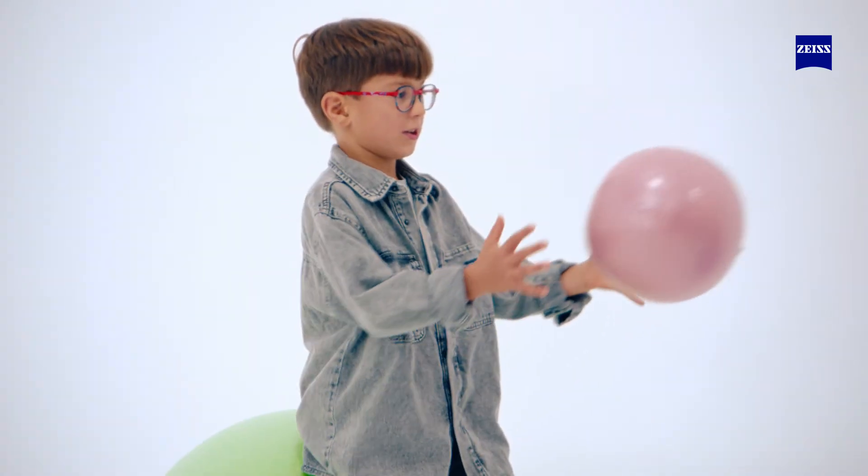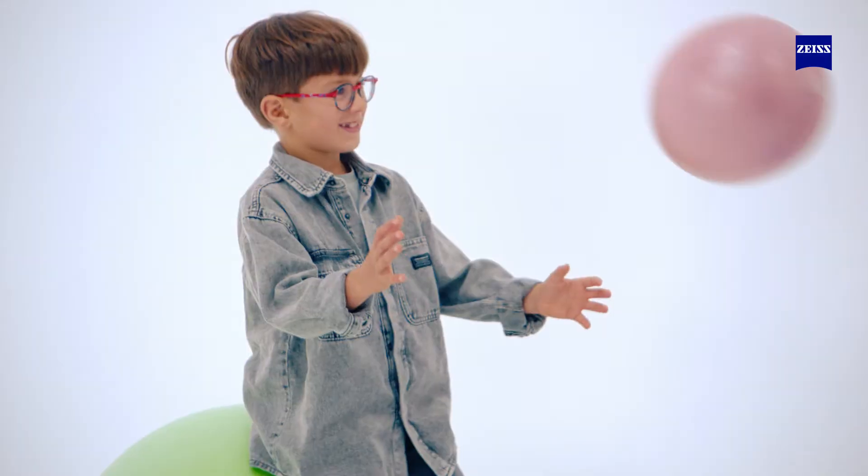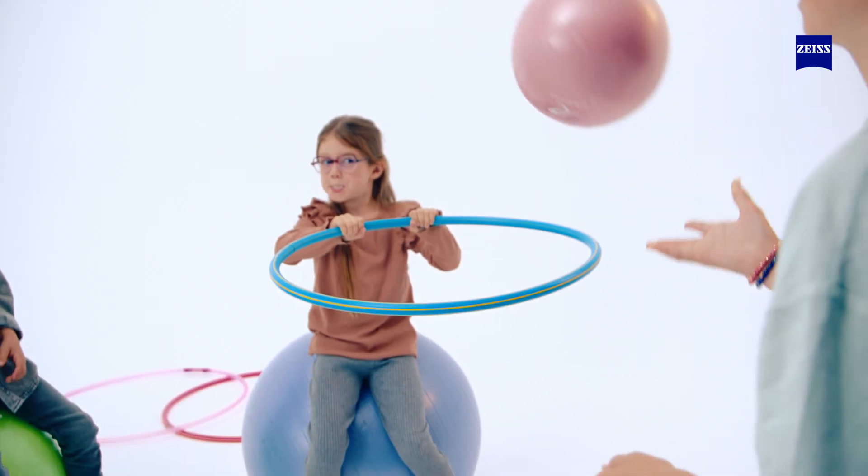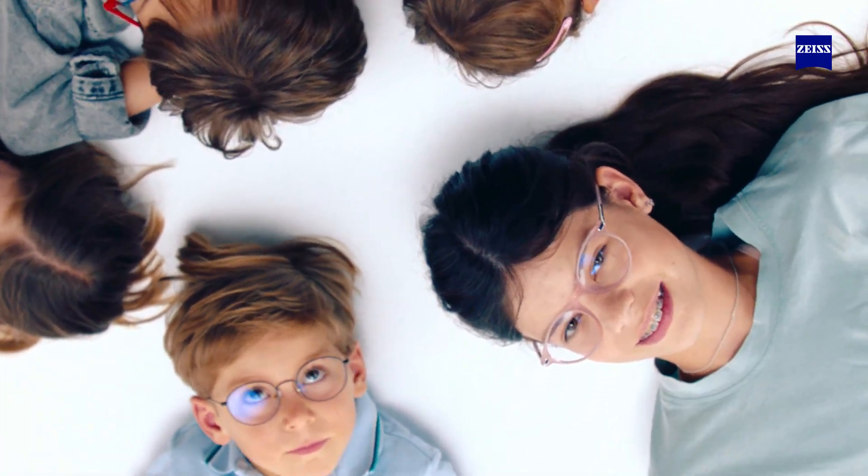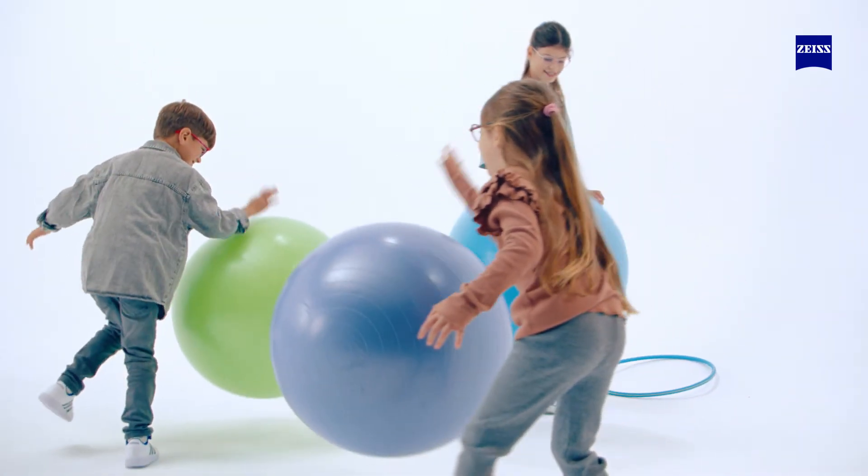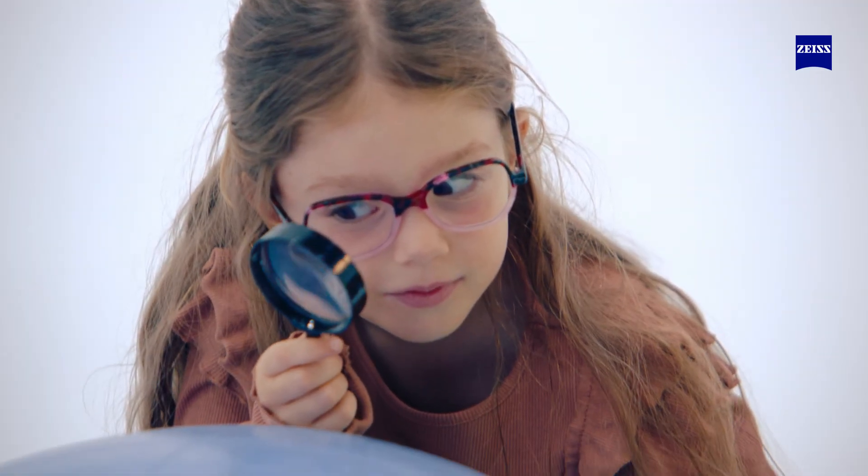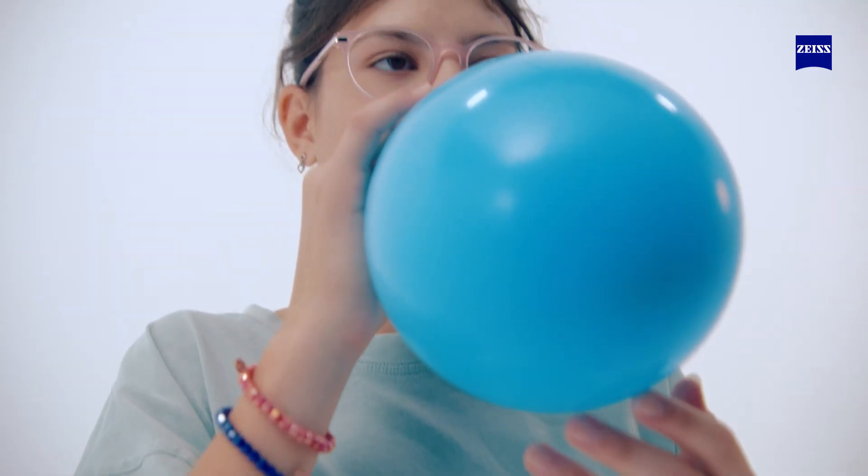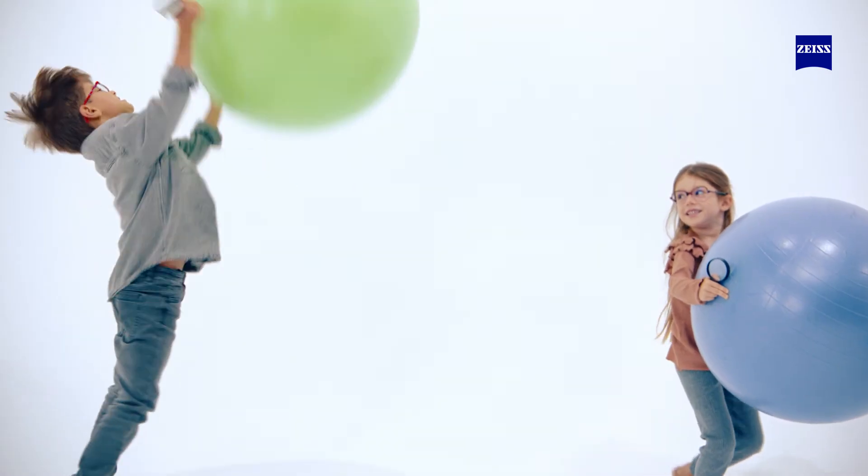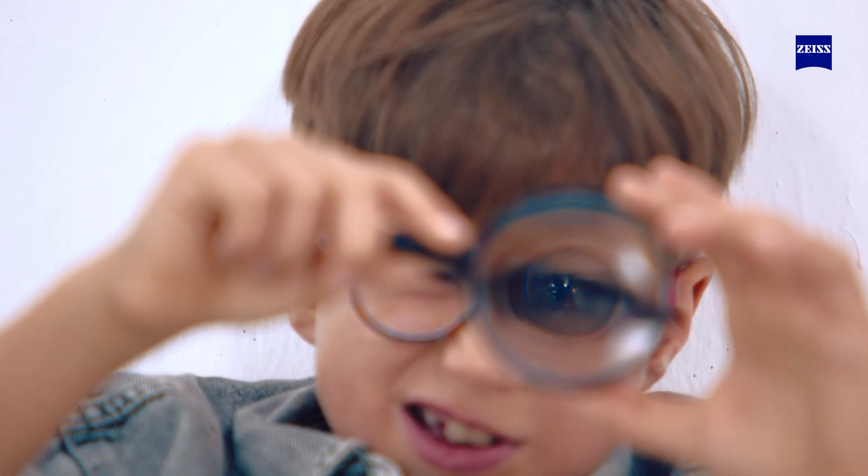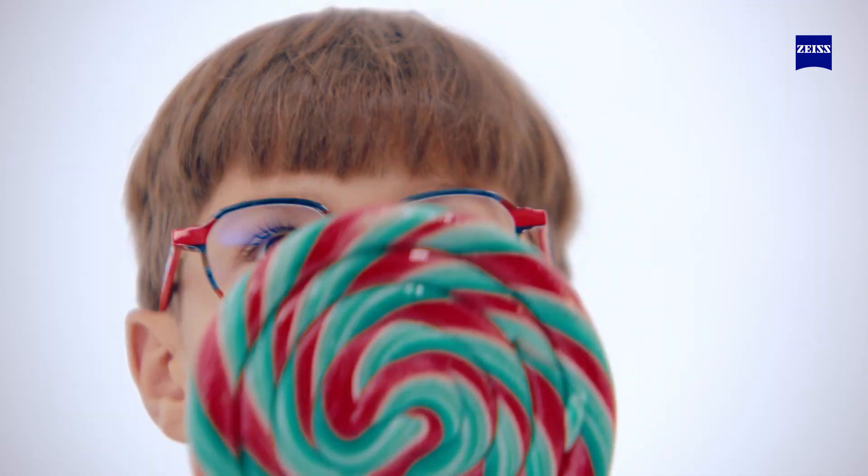Early results have shown that MyoCare lenses can effectively slow down children's myopia progression, keeping in mind that the lenses offer great wearability and comfort for children. For children presenting with signs of myopia progression, the best moment to prescribe ZEISS MyoCare is now, because every diopter matters.